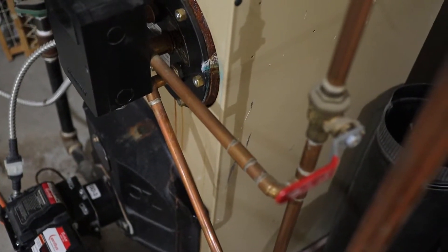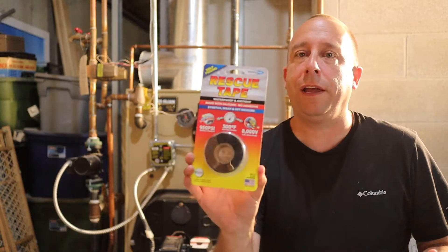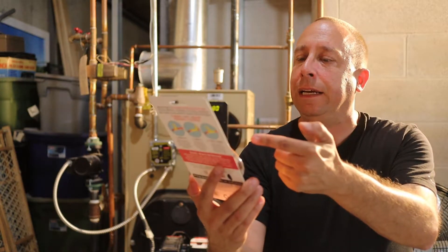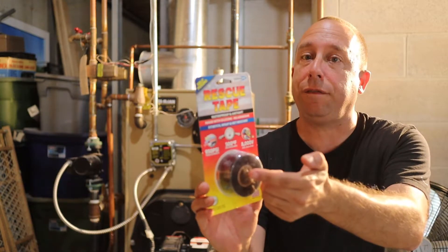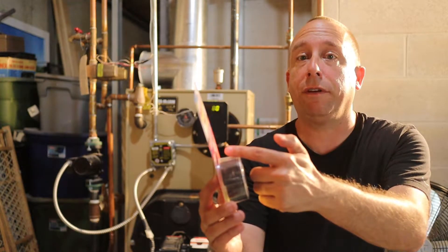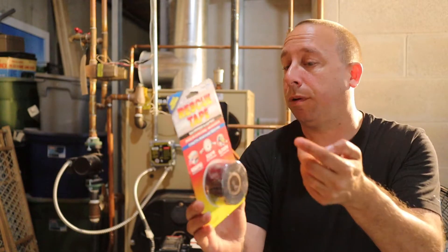So I just got back from the hardware store and I got some Bondit rescue tape. Hopefully this stuff will work. It says that it's rated for up to 950 PSI, 500 degrees Fahrenheit, and not that it applies here but 8,000 volts. Hopefully it should work and be pretty easy to apply. Let's check it out and see what happens.